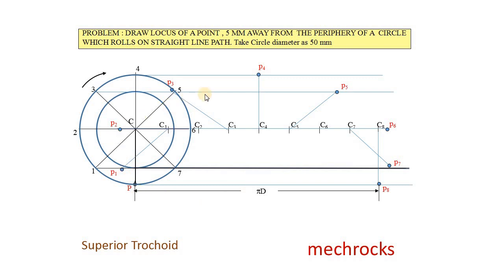Now, join all these points by a smooth curve with free hand only. Like this. This is the superior trochoid. Like this you can draw the superior trochoid. Thank you for watching my video.